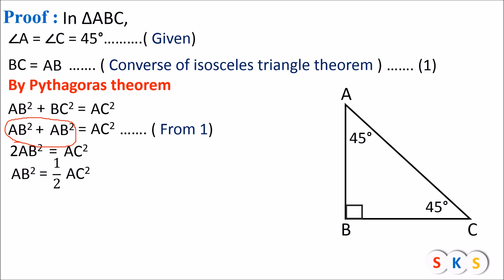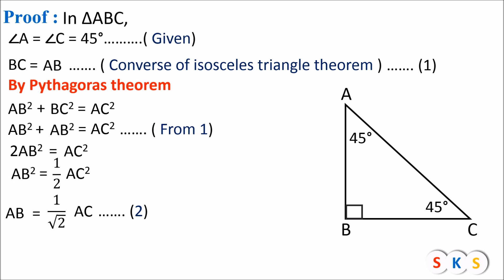Taking the square root of both sides: the square root of AB squared gives AB, and the square root of 1 upon 2 is 1 upon root 2, and the square root of AC squared is AC. So AB equals 1 upon root 2 times AC. We will call this equation number 2.